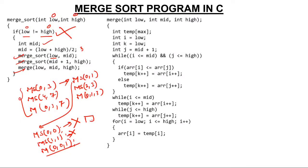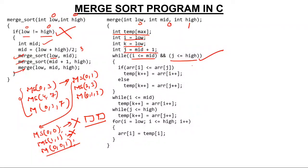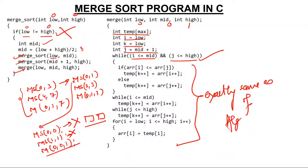I call merge(0, 0, 1) — that is, the first and second elements need to be merged. In merge, I'm passing 0, 0, and 1. I've created a temporary array of the same size, initialized i with low, K with low, and J with mid plus 1. Then the same loop: while i is less than or equal to mid and J is less than or equal to high — this part is exactly the same as the algorithm. I request you to kindly watch Merge Sort video number one so this becomes easy to understand. Thank you so much.